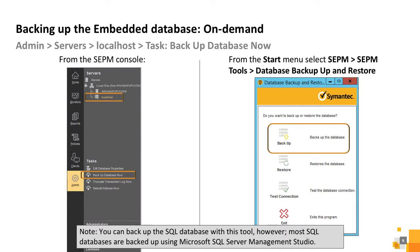You can perform an on-demand backup of an embedded database with the Symantec Endpoint Protection Manager console. Navigate to Admin, Servers. For the Database Backup and Restore Utility, navigate to the Windows Start menu and select Programs, Symantec Endpoint Protection Manager, Symantec Endpoint Protection Tools, Database, Backup and Restore. Note this path may vary by operating system.